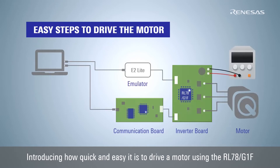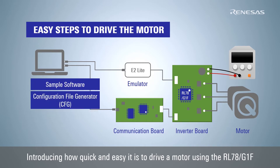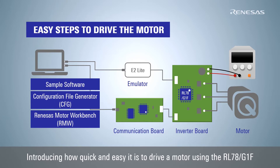This video introduces a quick and easy solution to drive a motor using Renesas's cost-effective 16-bit microcontroller RL78. By using an inverter board equipped with RL78G1F, a communication board, an emulator such as E2Lite, sample software and tools such as the configuration file generator, and Renesas Motor Workbench (RMW) provided by Renesas, driving and evaluating the motor can be easily done.